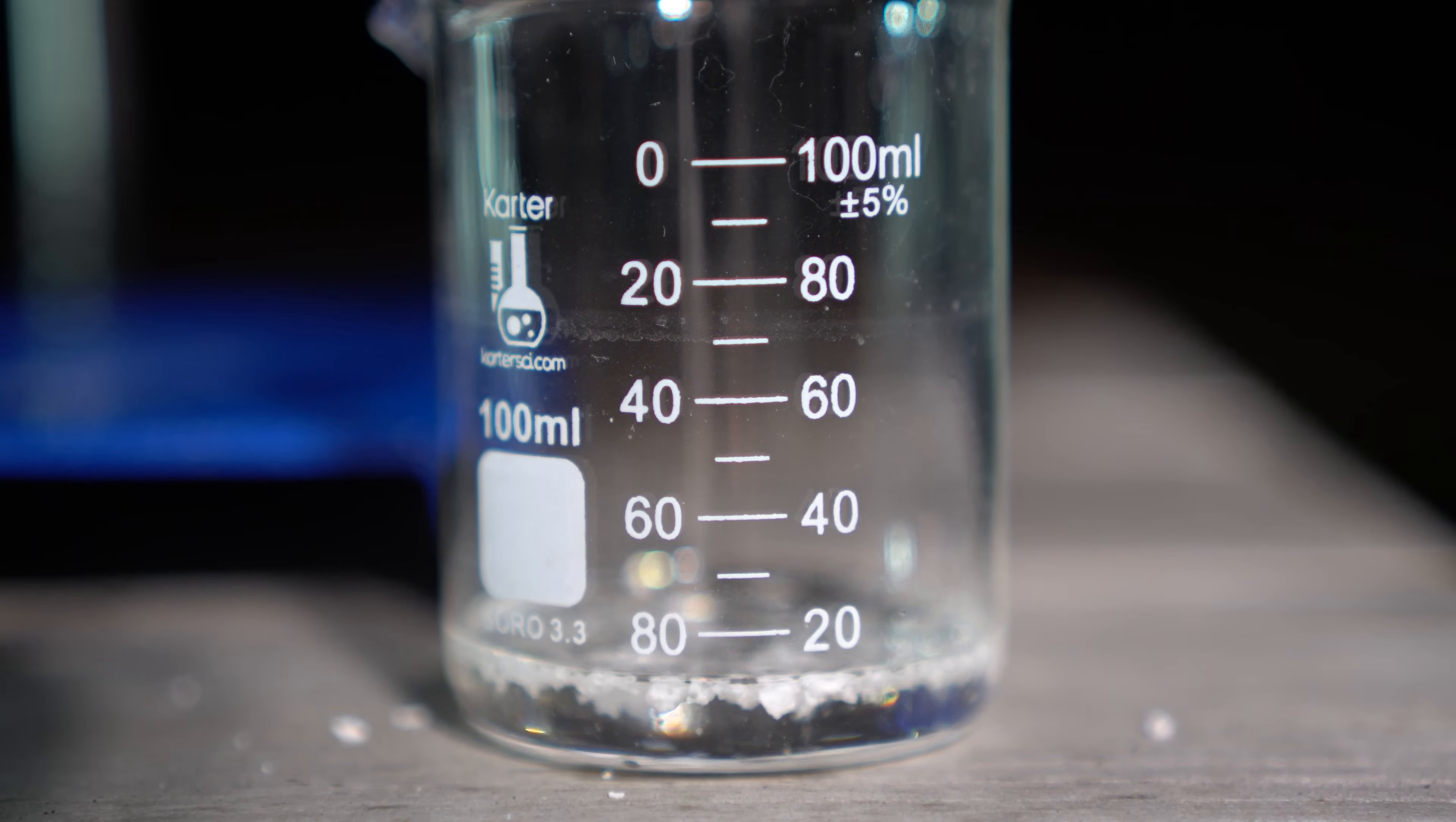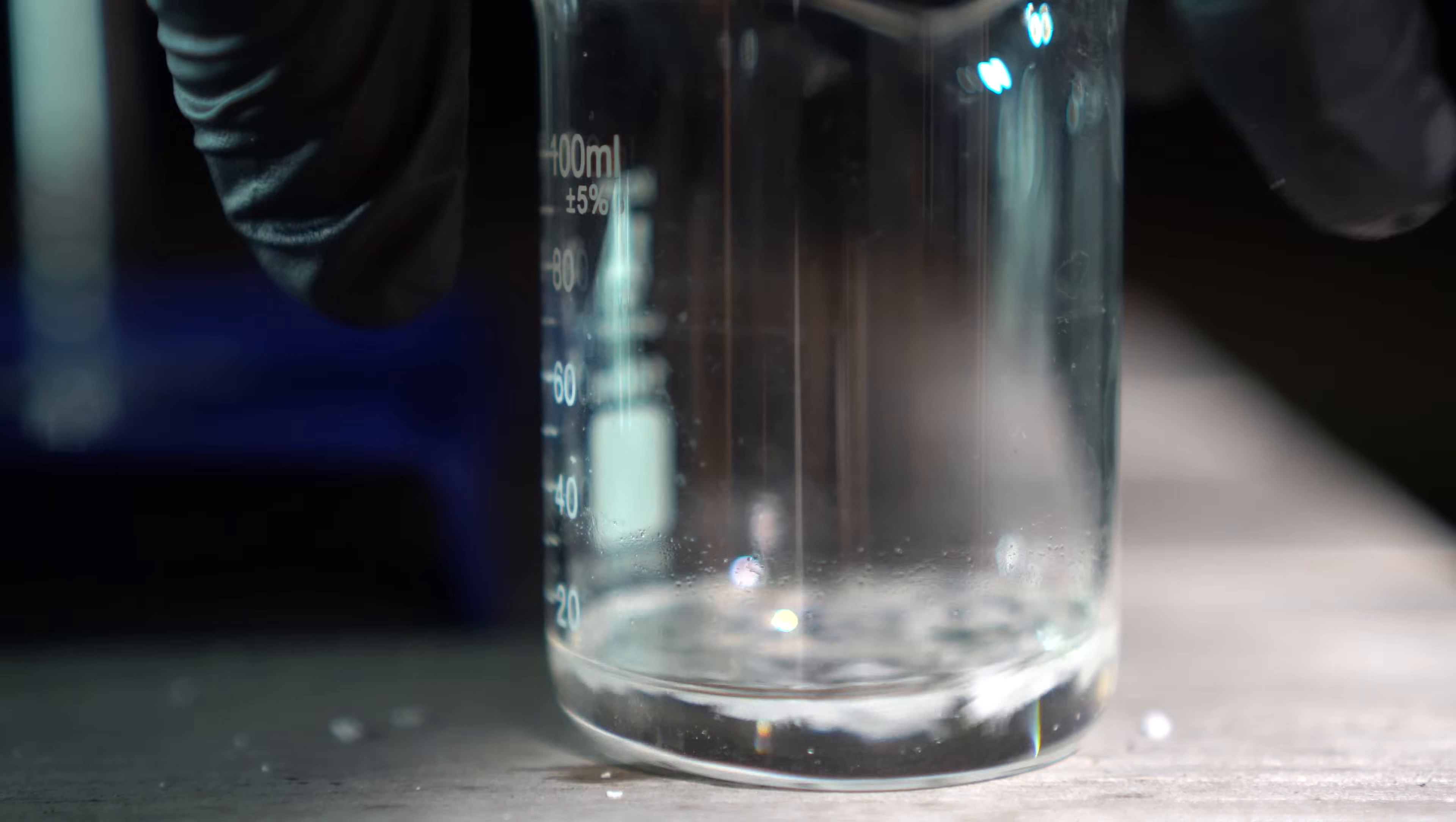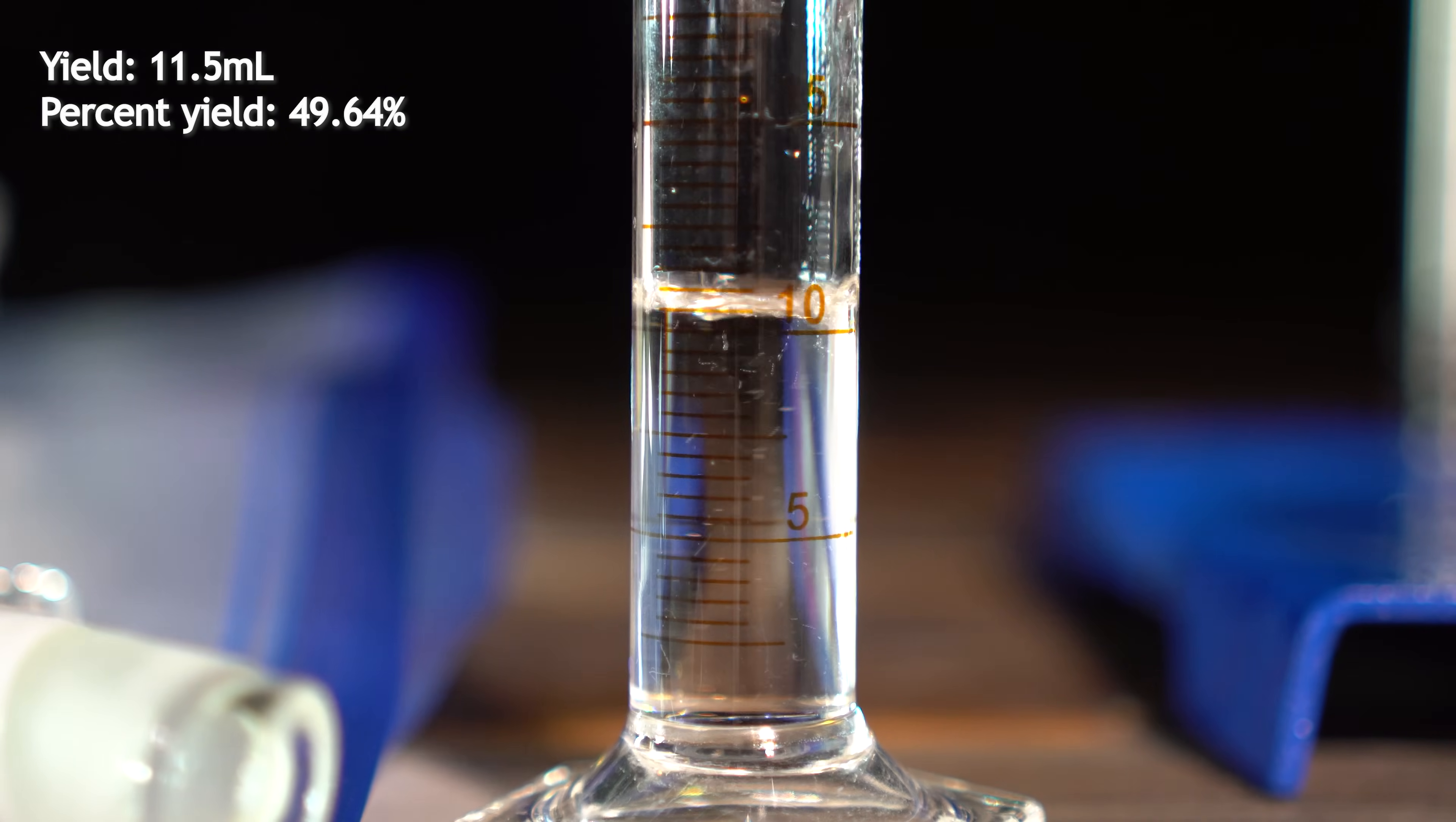All I needed to do now was dry the iodomethane with some calcium chloride. This should dry up any of our product from any extra water. Roughly 11.5 milliliters of iodomethane was obtained, resulting at a 49.64% yield.